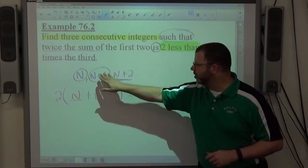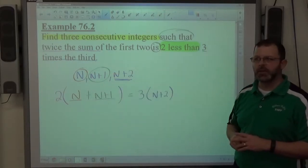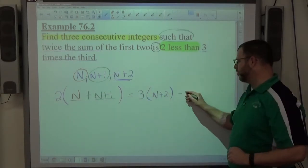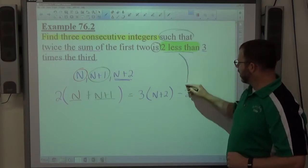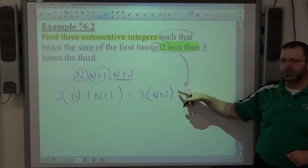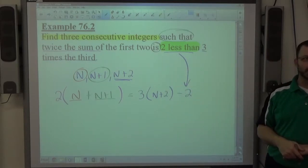But three times this or three times that require parentheses around that. And it says all this stuff is two less than all this stuff, so a minus two goes on this side. The two less than happens afterward is, so we put the minus two after the equal sign at the very end of the problem.